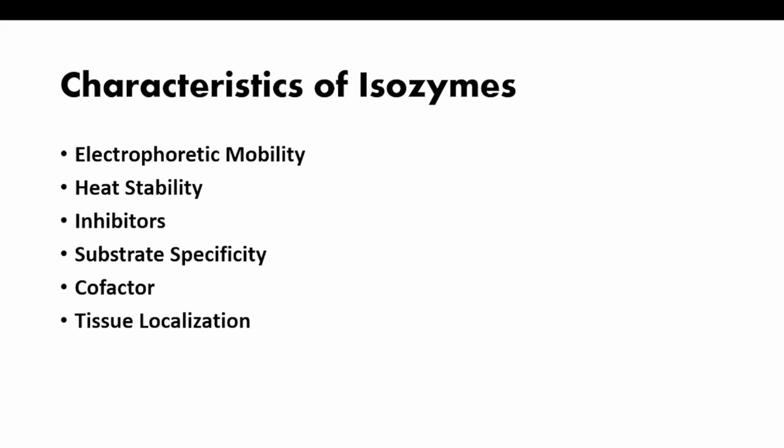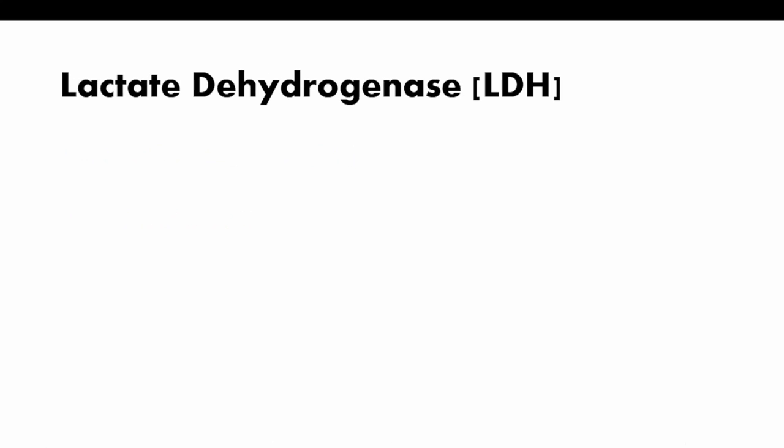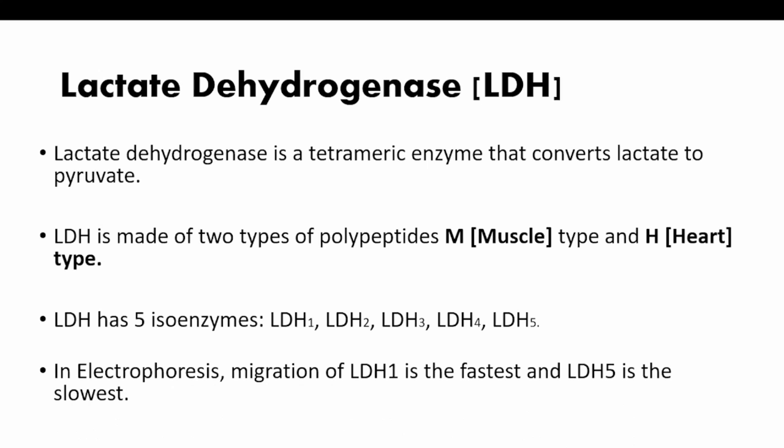Looking at examples in detail: lactate dehydrogenase is a tetrameric enzyme that catalyzes the oxidation of lactate to pyruvate. LDH has five isoenzymes: LDH1, LDH2, LDH3, LDH4, and LDH5. LDH is made up of two types of polypeptide — M type (muscle type) and H type. These five isozymes of LDH can be separated by electrophoresis due to their difference in electrophoretic mobility. LDH1 is the fastest moving and LDH5 is the slowest.